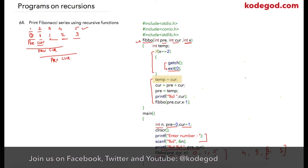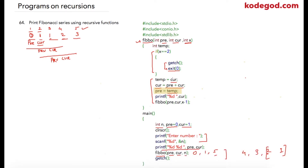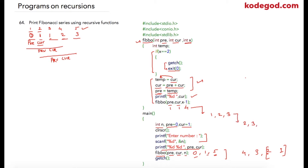Once x equals two, the program will be terminated. If this condition is not true, the regular operation is executed: we store the current value into a temp variable, add the two numbers, store the result into current, and store temp — which holds the old current value — into previous. We are doing the addition and swapping values of previous and current. Once that is done, we print the current value, and then pass the new previous and current values along with the decremented iteration number. So initially passing 0, 1, 5 — next call becomes 1, 1, 4.